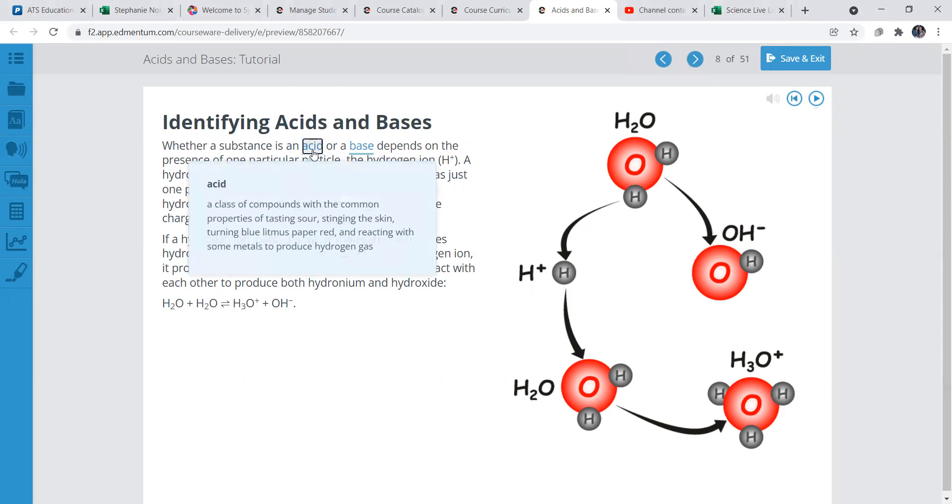Identifying acids and bases. Acids, a class of compounds with the common properties of tasting sour, stinging the skin, turning blue litmus paper red, and then reacting with some metals to produce hydrogen gas. Think of like maybe sour tasting candy, something like that.